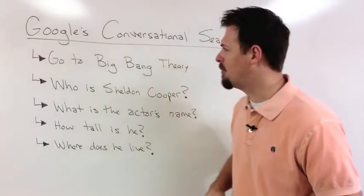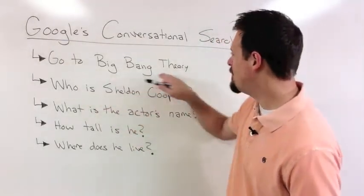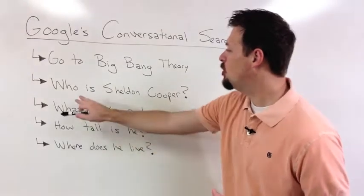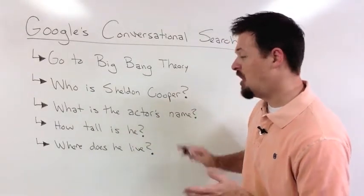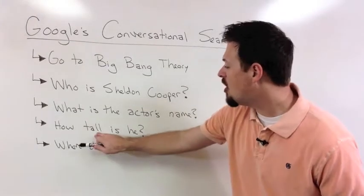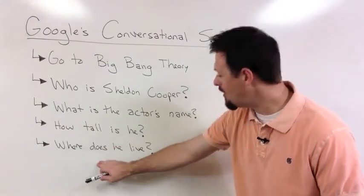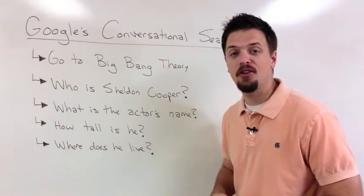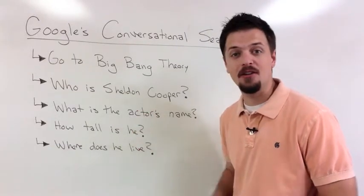Here's the example that we came up with. Go to Big Bang Theory and ask who is Sheldon Cooper. Follow that by asking what is the actor's name, how tall is he, and finally where does he live. Now Google is clever enough to know who the he is in the search.